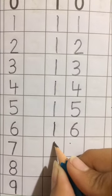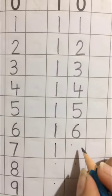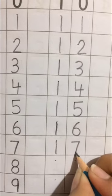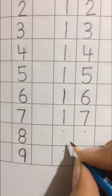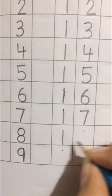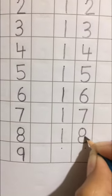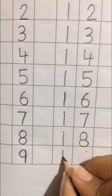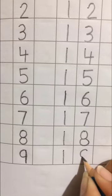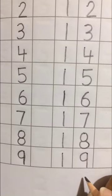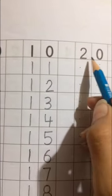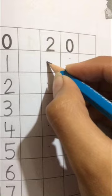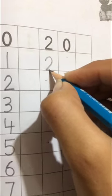16 ke baad 17. 1, 7 kya ban gaya? 17. 17 ke baad kya aata hai? 18. 1, 8, 18. 1, 9, 19. Okay? Ab yahan par dekhe 2, 0, 20 likhawa hai. Iske baad kya aata hai? 21. So, you have to write 2, 1.